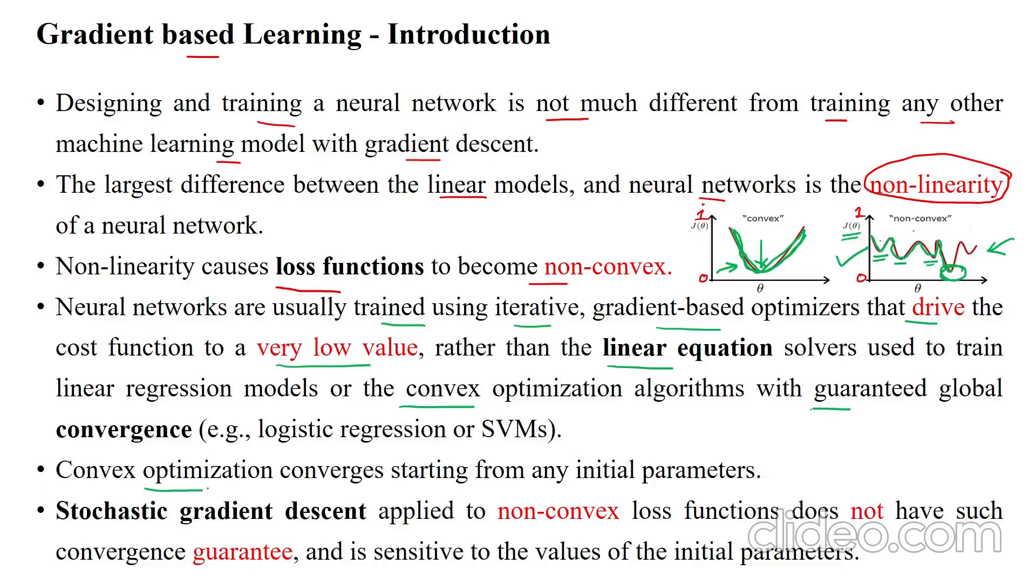Convex optimization converges using the optimization function starting with random initial parameter values, that is wi and bias value bi.